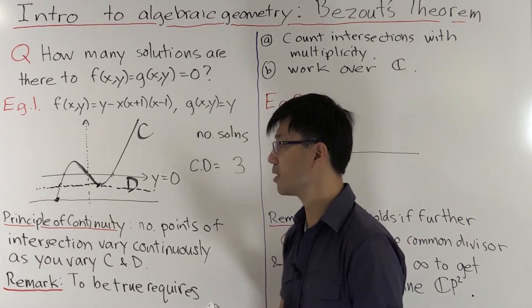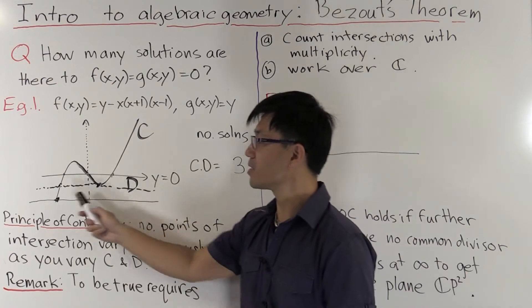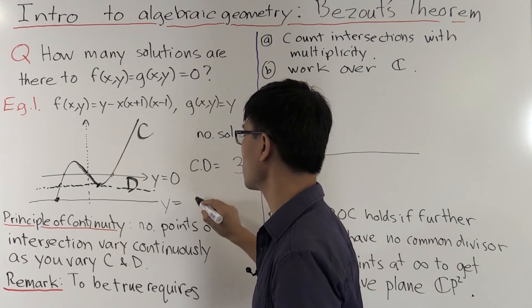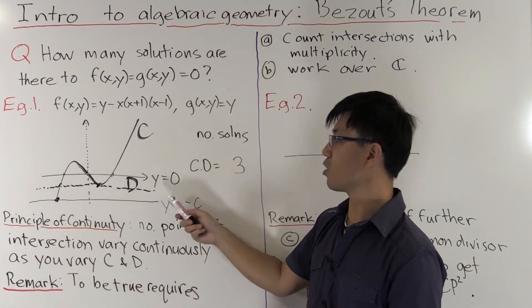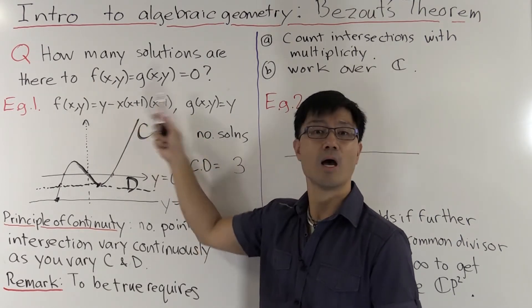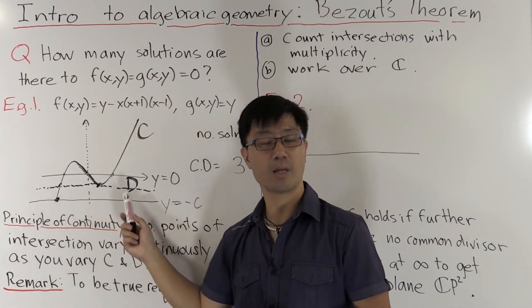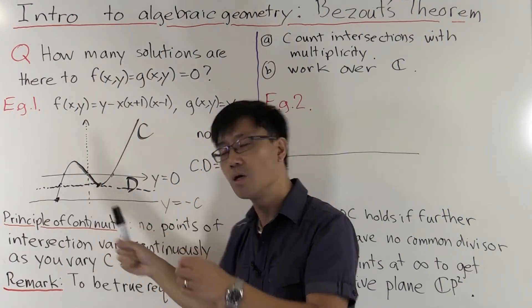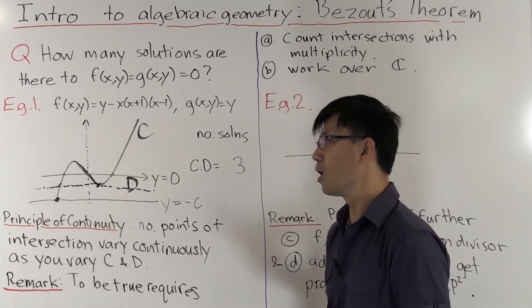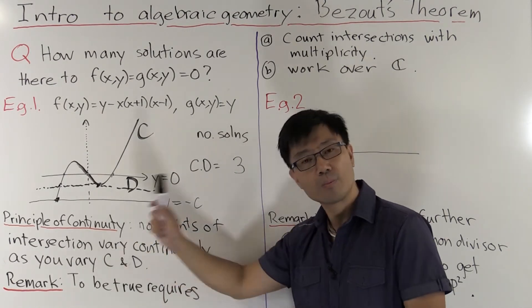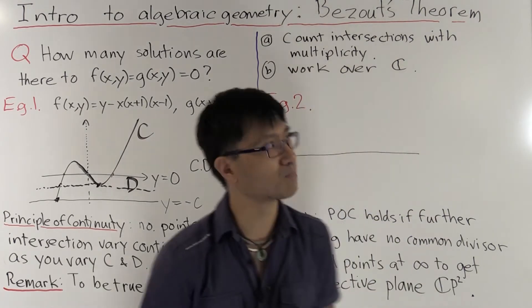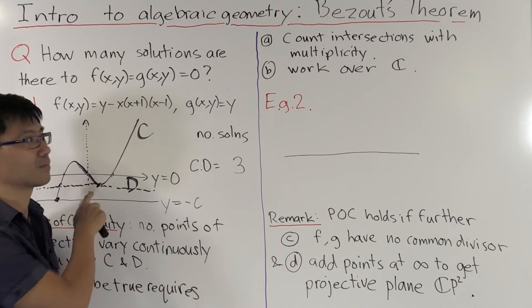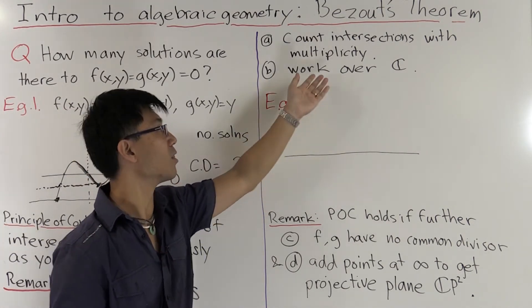If we push further, there's only one real point of intersection. However, if instead of working over the reals we work over the complex numbers, we're solving a cubic equation and still have three complex roots. The two real roots simply became complex. So if you want the principle of continuity to be true, you need two assumptions: count points of intersection with multiplicity, and work over the complex numbers.